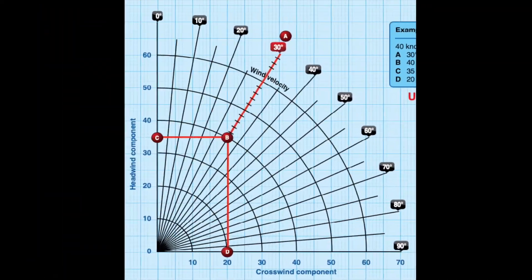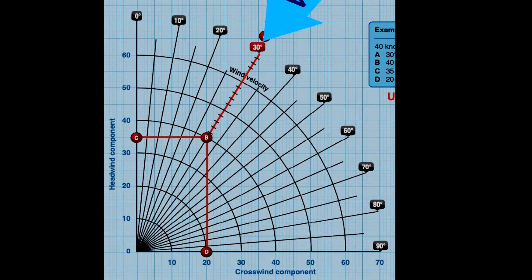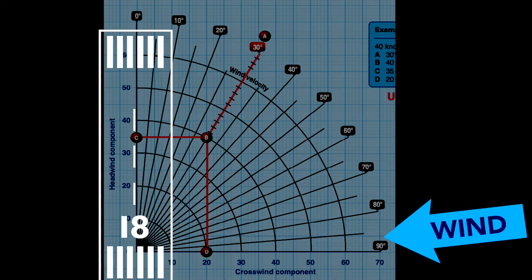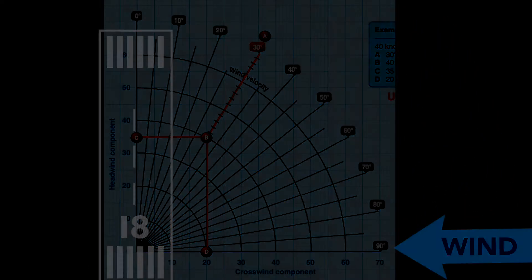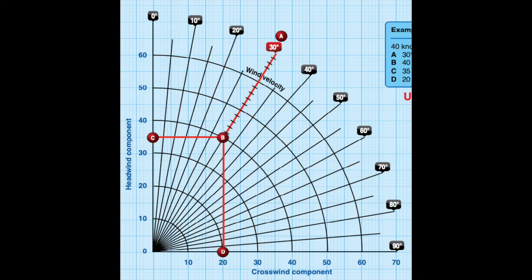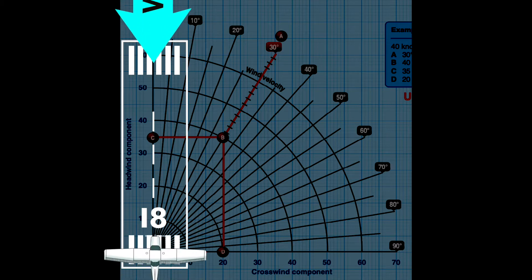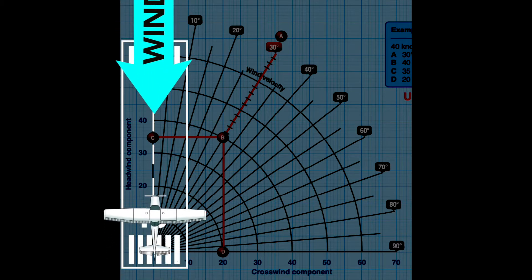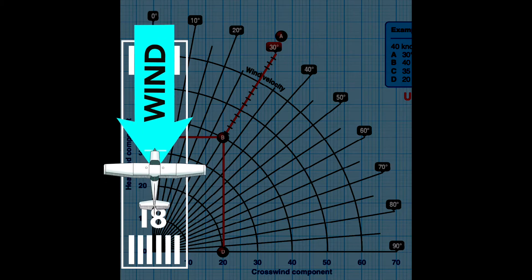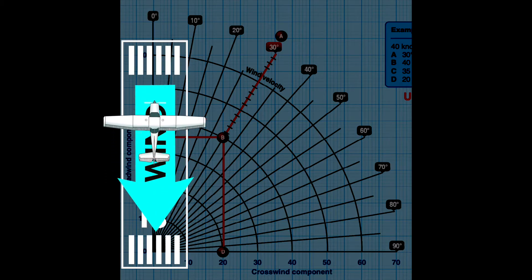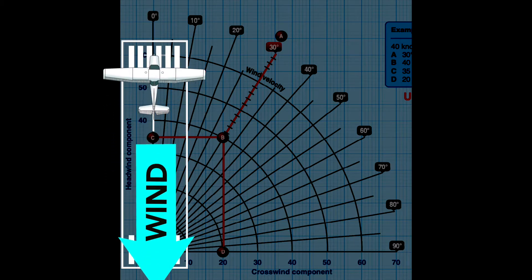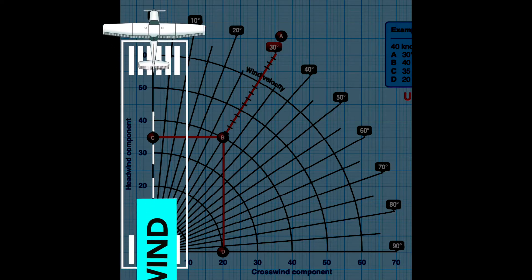We can see how much crosswind we need to counteract from pushing us to either side of a runway and how much of a direct headwind is lost due to wind not aligning with the runway. If we had a zero degree angular difference between wind and runway directions, the wind is blowing right down along the runway.